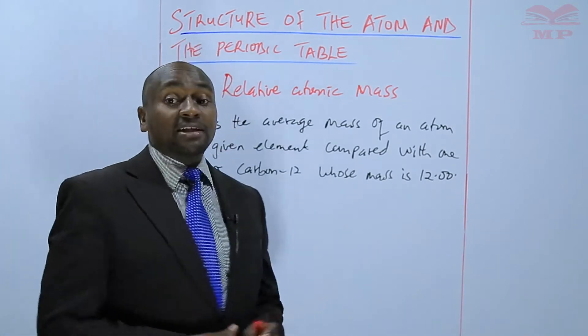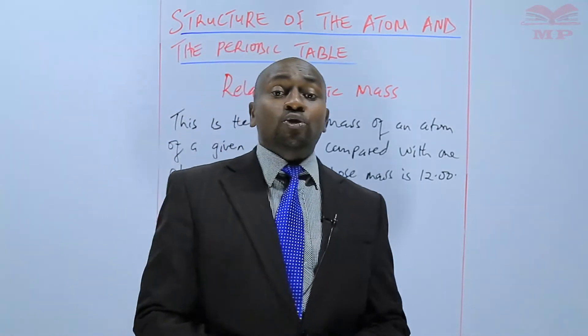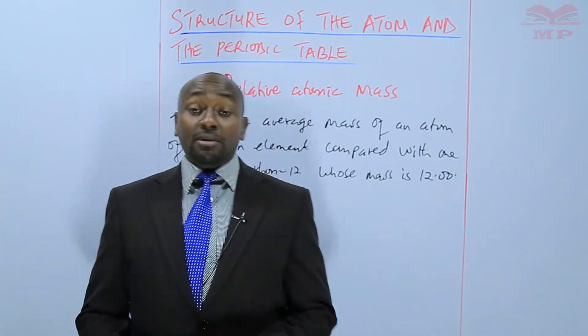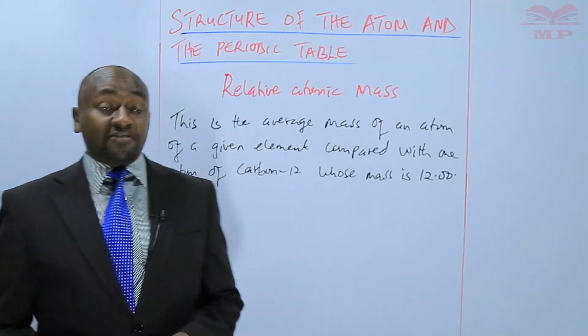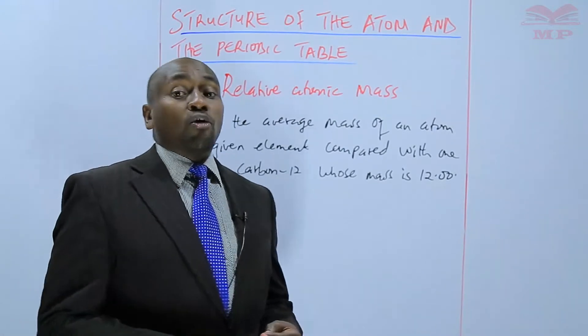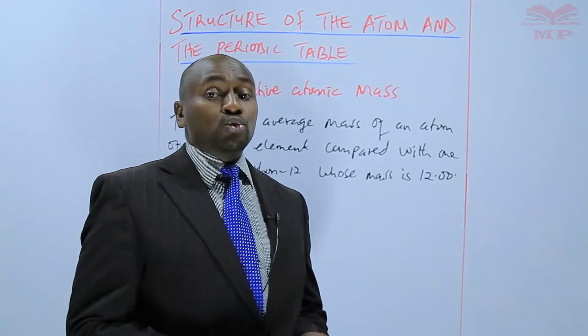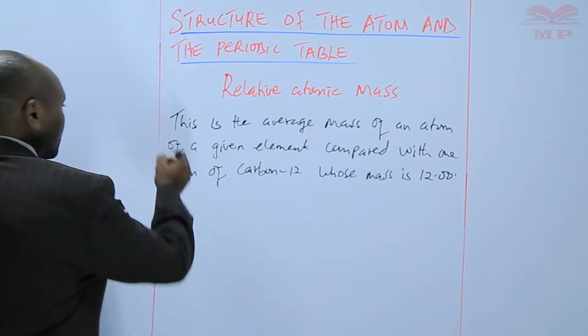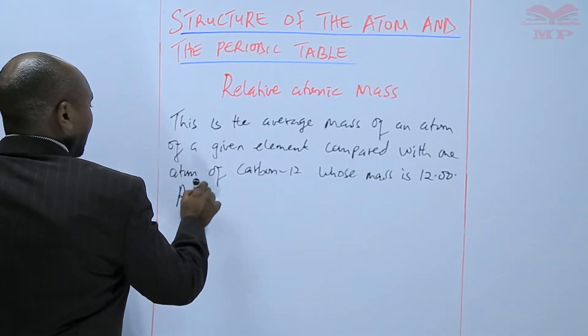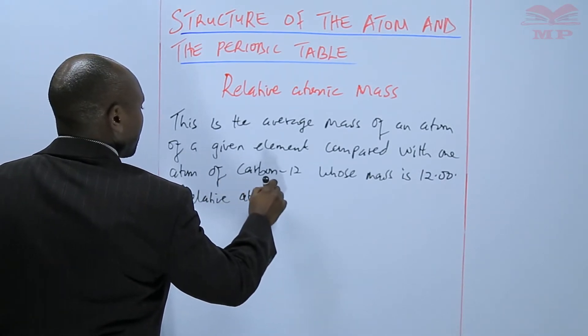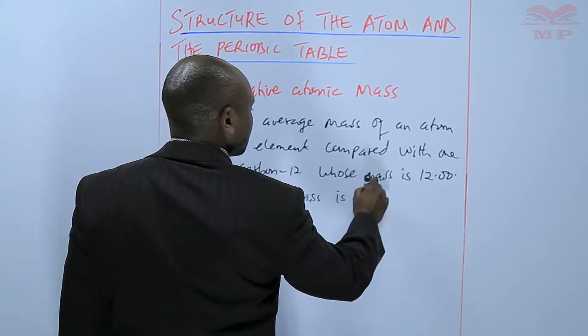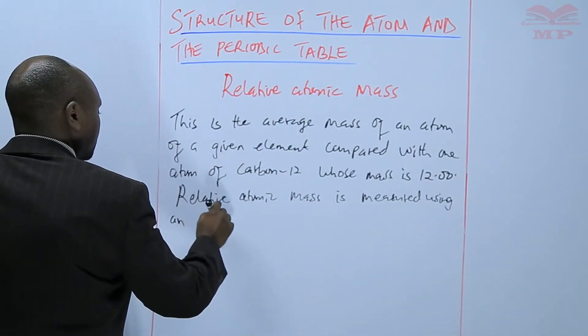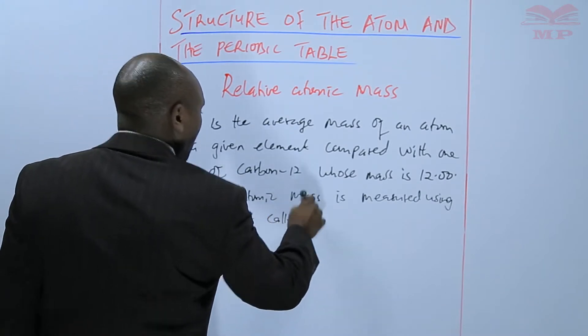There is a formula that is used to calculate the average mass, or the relative atomic mass, especially where we have isotopes. We know that isotopes are atoms of the same element, having the same atomic number, but different mass number. So, if you have different mass numbers of the same element, then we can be able to calculate the relative atomic mass, or the average atomic mass. Before we do that, it is also important to see that relative atomic mass is measured using an instrument called mass spectrometer.